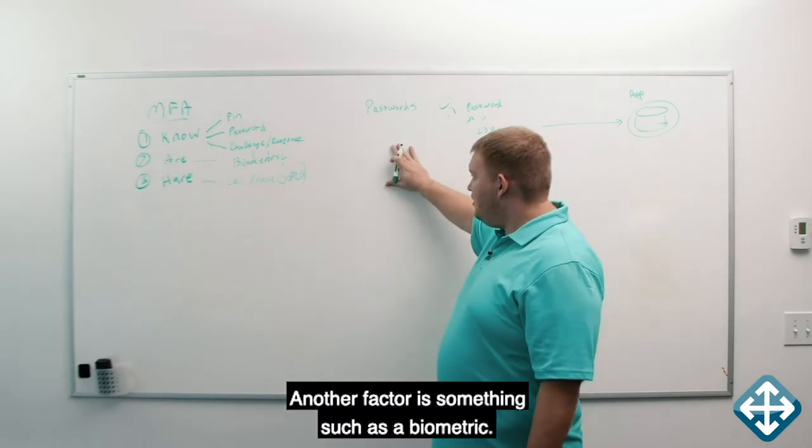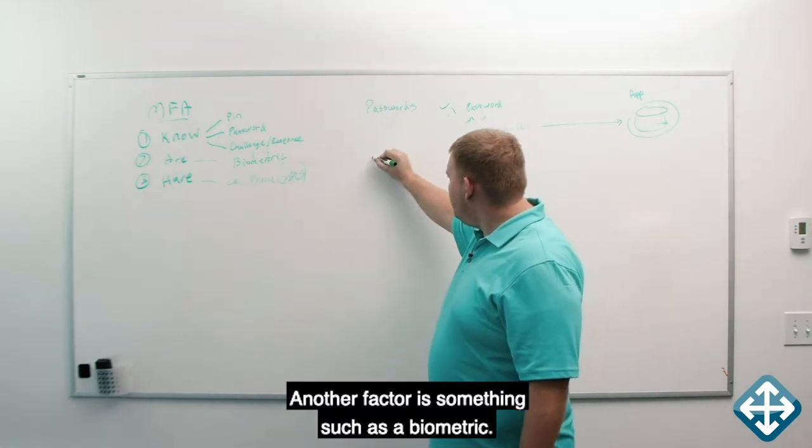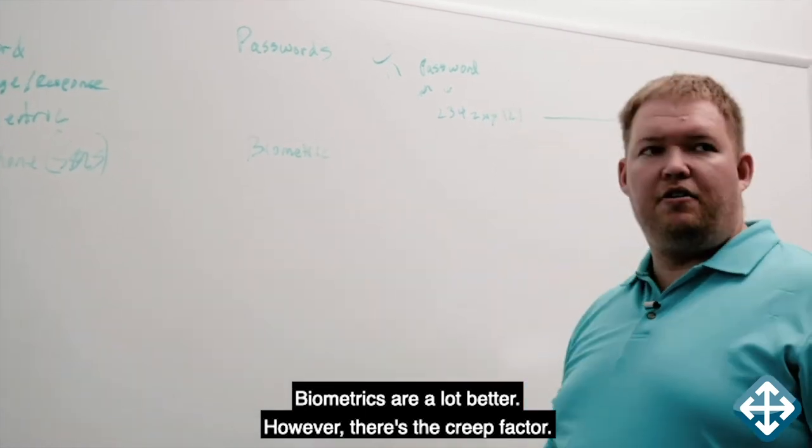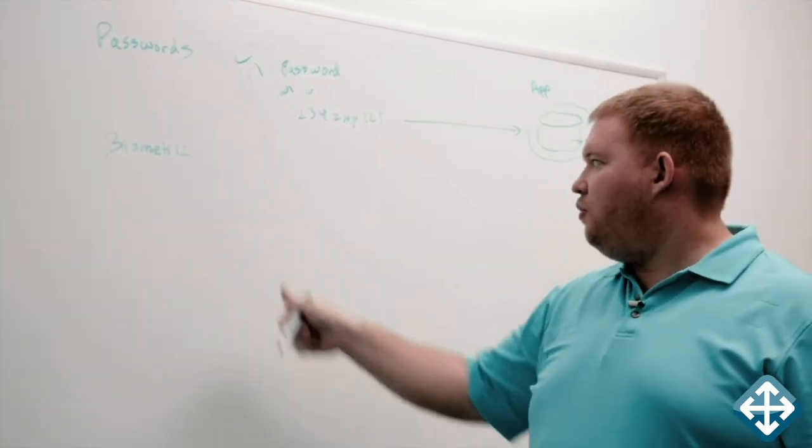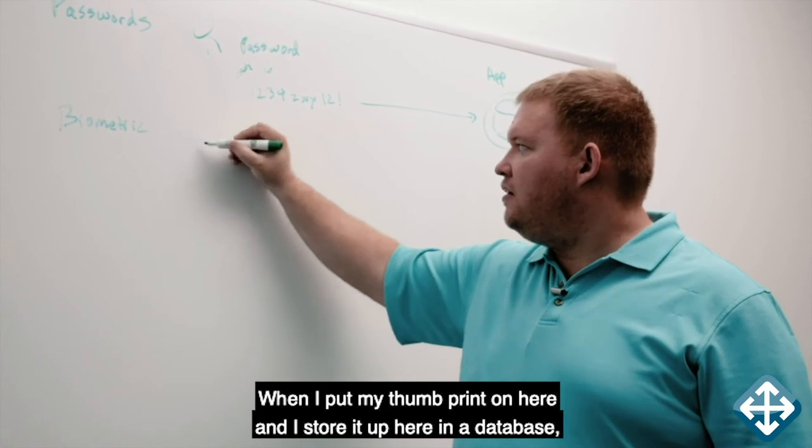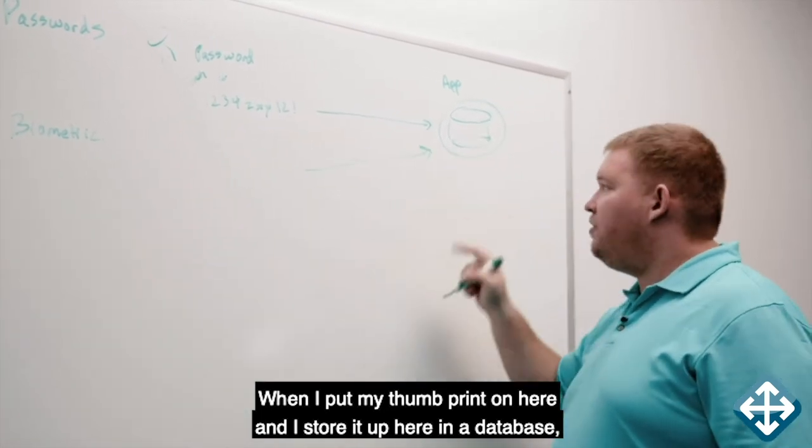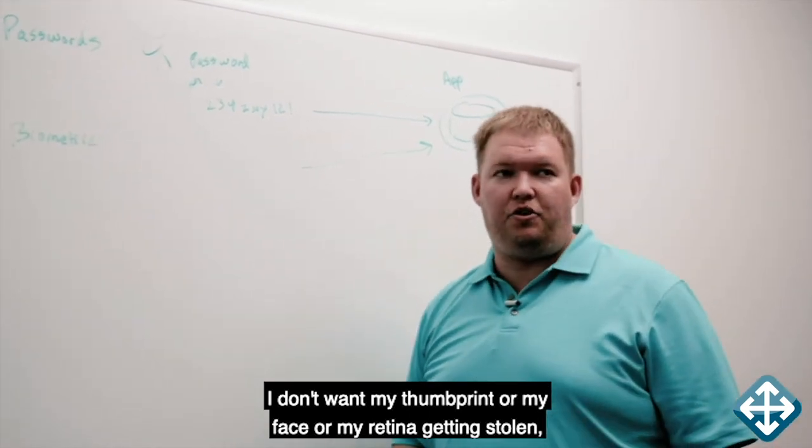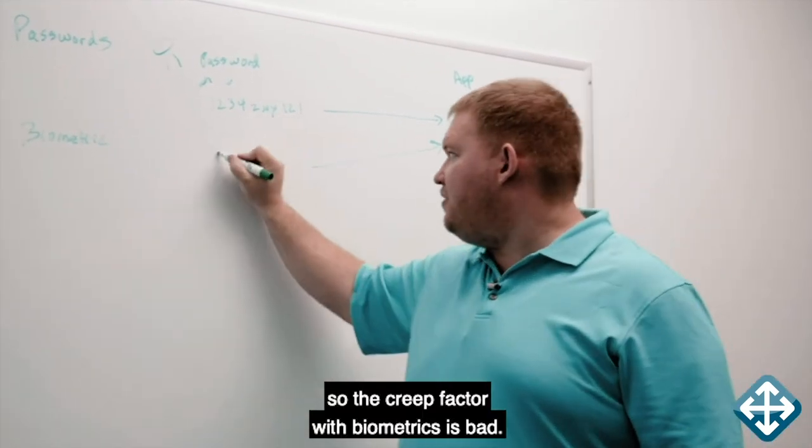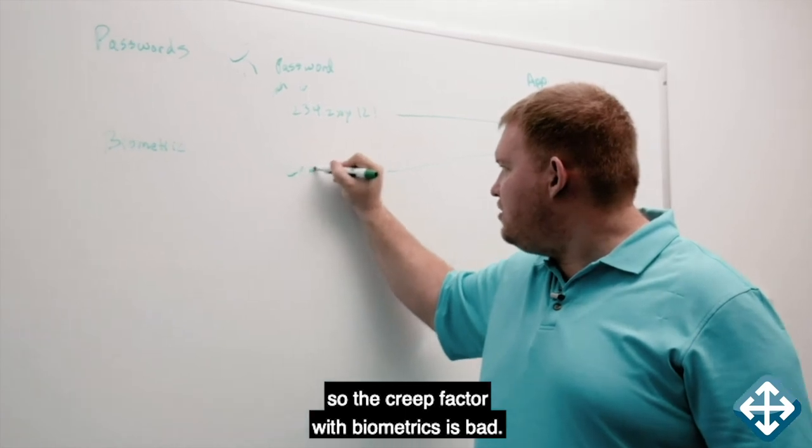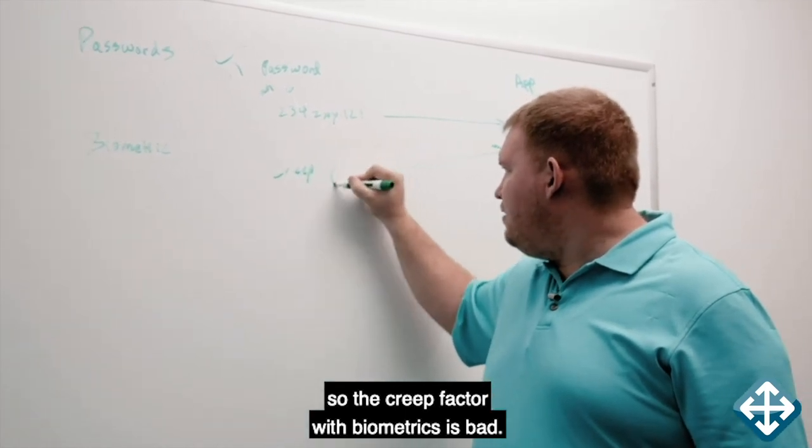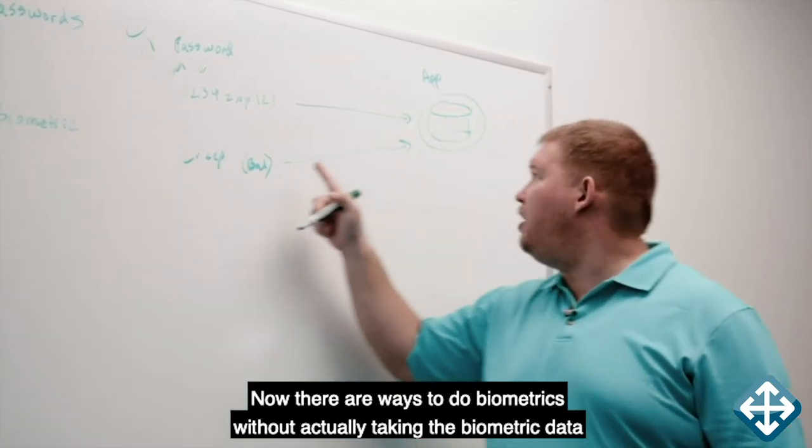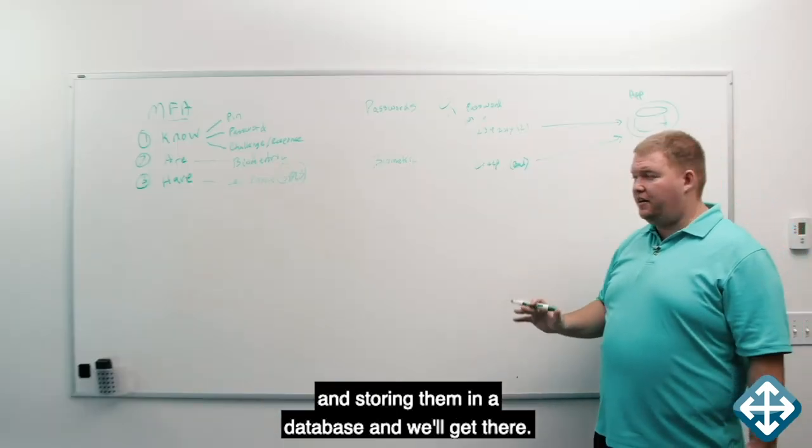Another factor is something such as a biometric. Biometrics are a lot better. However, there's the creep factor. When I put my thumbprint on here and I store it up here in a database, I don't want my thumbprint or my face or my retina getting stolen. So the creep factor with biometrics is bad. Now there are ways to do biometrics without actually taking the biometric data and storing them in a database and we'll get there.